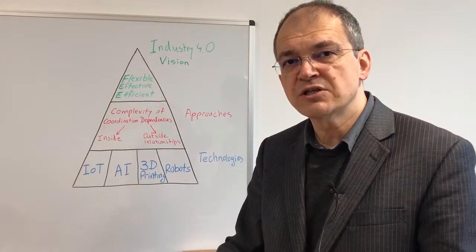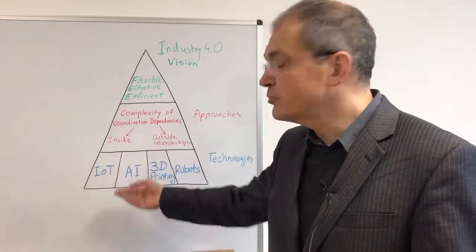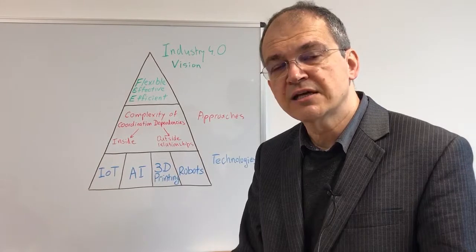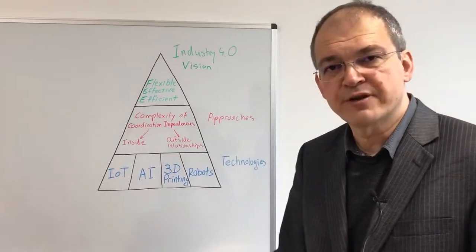Once we have this image, this model of the current status of the factory, we can then deploy artificial intelligence reasoning to allow us to find new more optimal ways to do our manufacturing production.